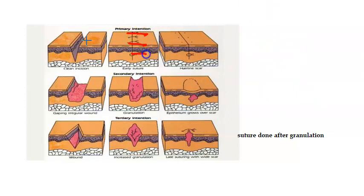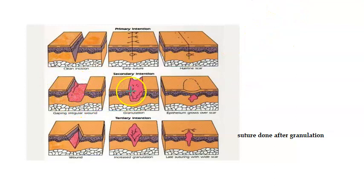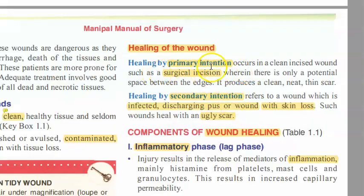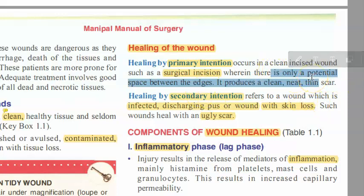In primary intention, they have put sutures. There is a clean cut and you have approximated both the sides. There are sutures and there is only a hairline scar at the end. Primary intention occurs when there is clean incised wounds like a surgical incision. There is only a potential space between the edges, so there will be a clean, neat, thin scar — basically the two ends are approximated and close to each other.